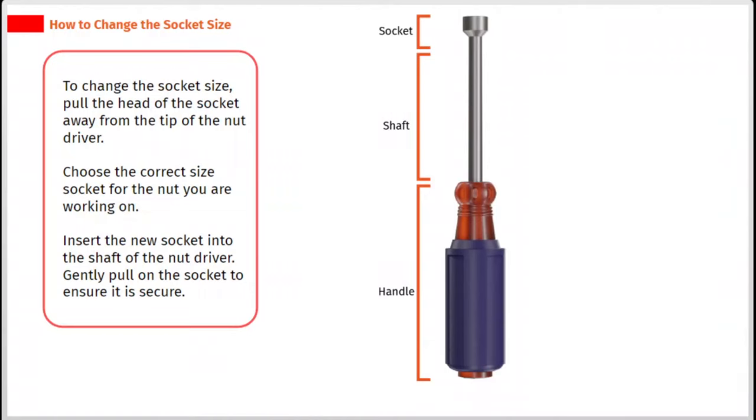To change the socket size, pull the head of the socket away from the tip of the nut driver. Choose the correct size socket for the nut you are working on. Insert the new socket into the shaft of the nut driver. Gently pull on the socket to ensure it is secure.